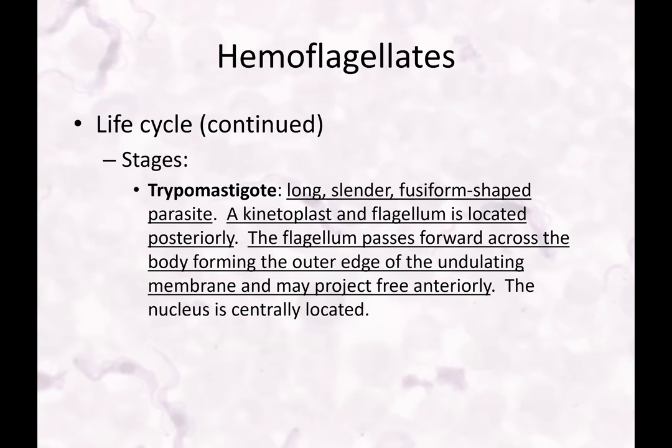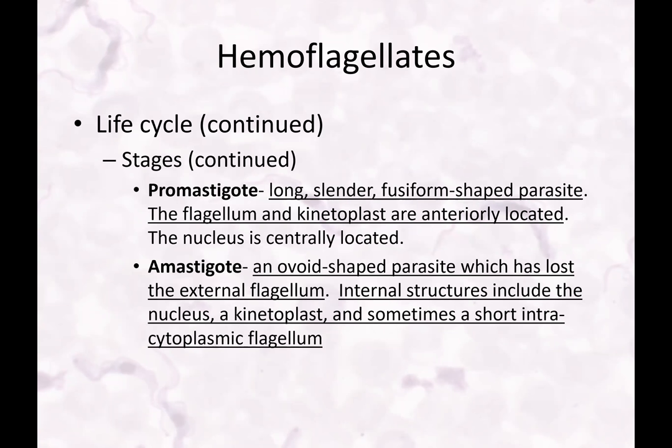We had the trypomastigote first, and then we have the promastigote. The promastigote is also long, slender, and fusiform-shaped. The flagellum and kinetoplast are still present but anteriorly located, and the nucleus is centrally located. Then the amastigote is the ovoid-shaped parasite which has lost the external flagellum — that makes it easy to identify. Internal structures include the nucleus, kinetoplast, and sometimes a short intracytoplasmic flagellum, but not the long external flagellum.